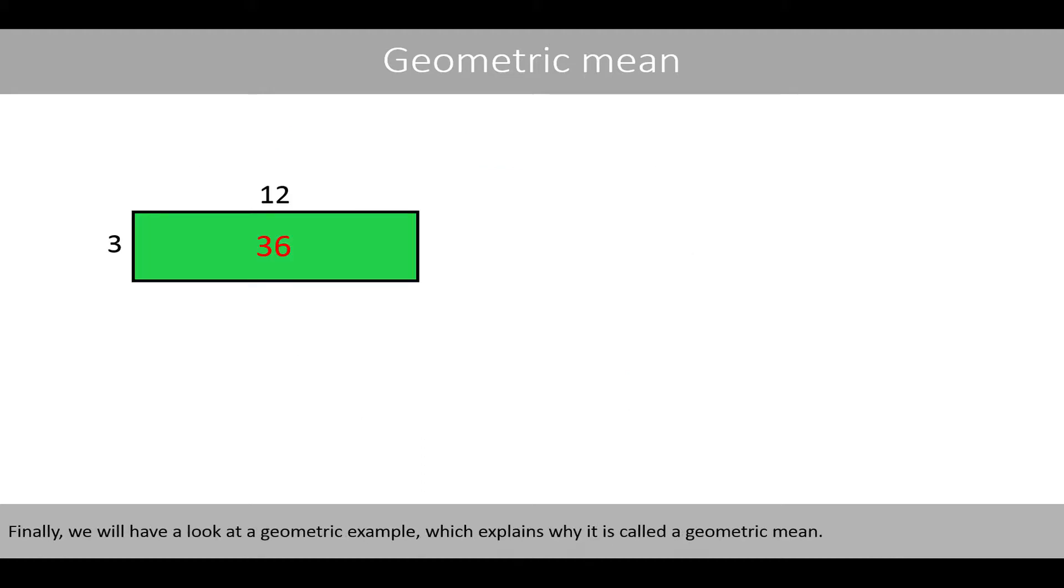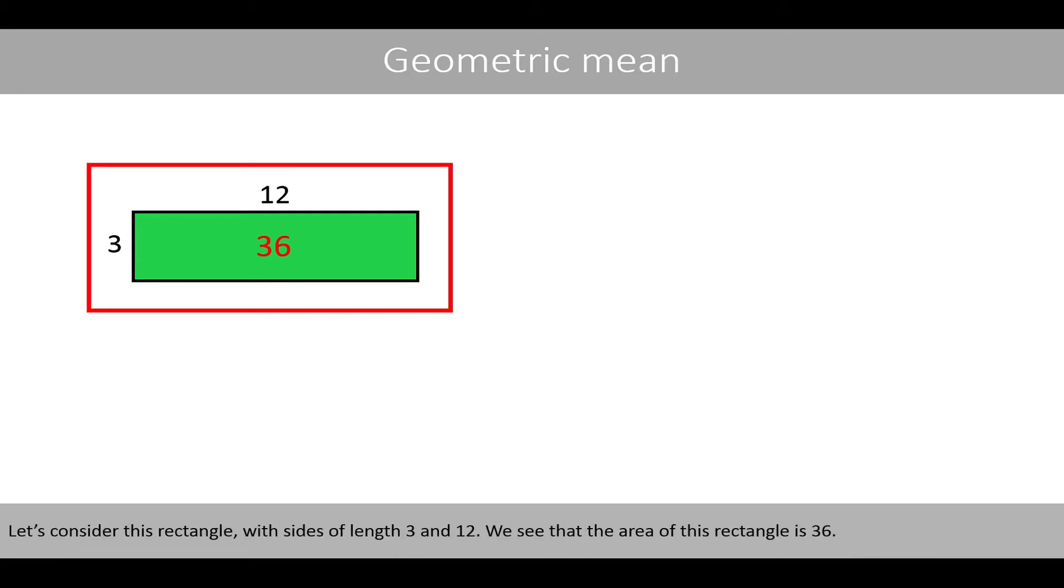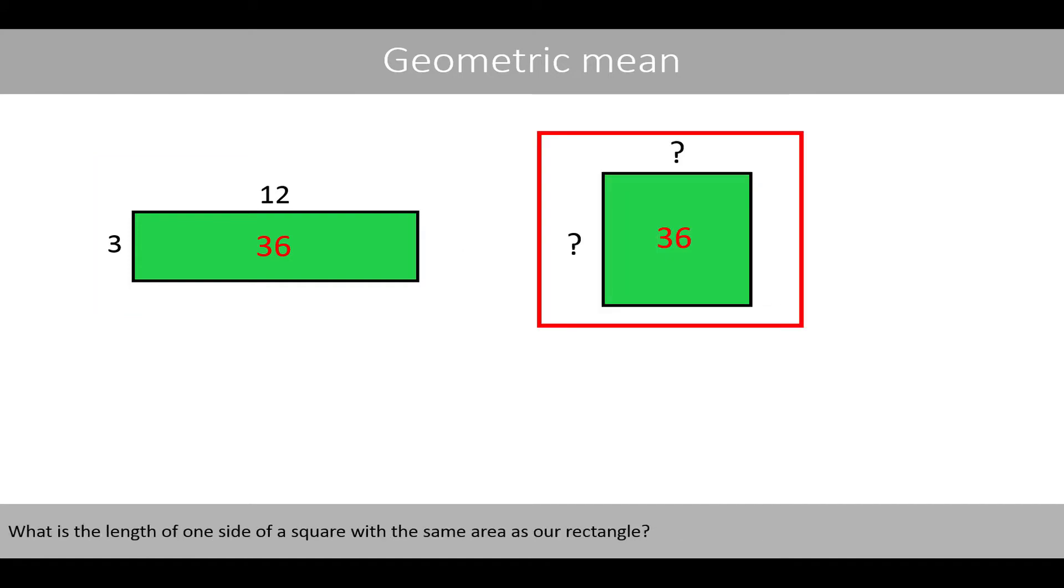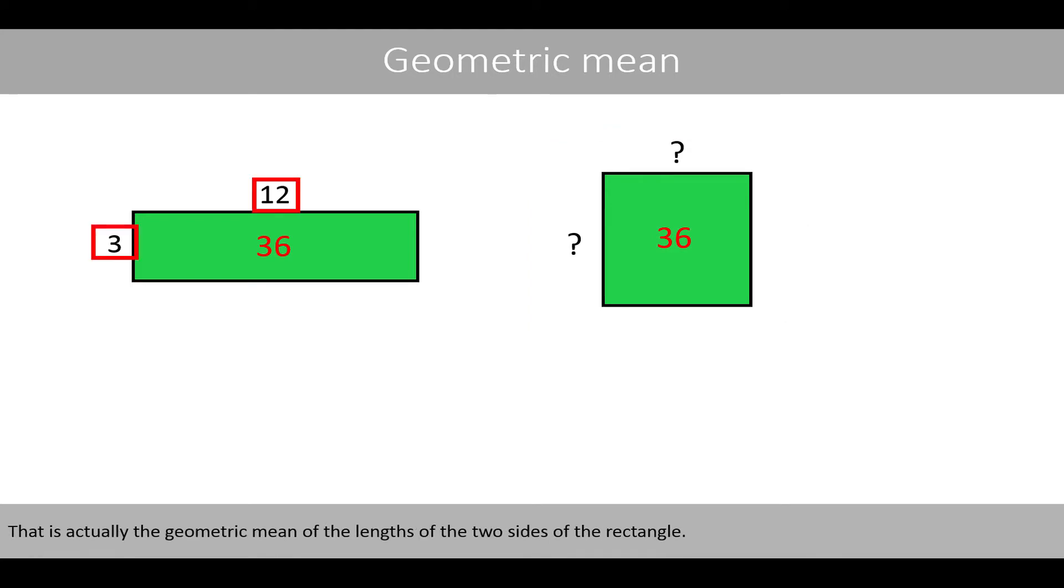Finally, we'll have a look at the geometric example, which explains what is called a geometric mean. Let's consider this rectangle with sides of length 3 and 12. We see that the area of this rectangle is 36. What is the length of one side of a square with the same area as our rectangle? That is actually the geometric mean of the lengths of the two sides of the rectangle.